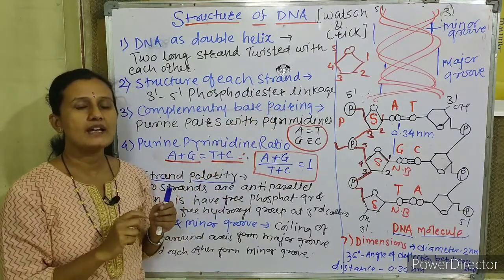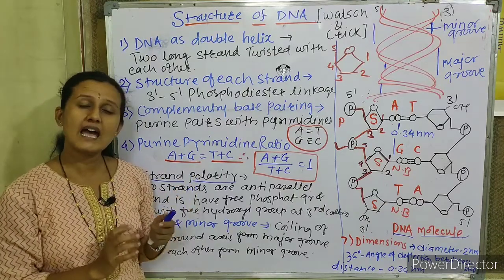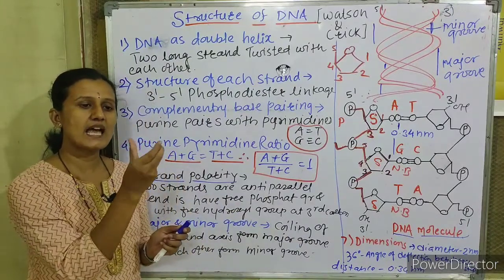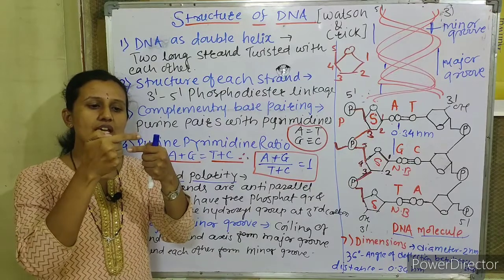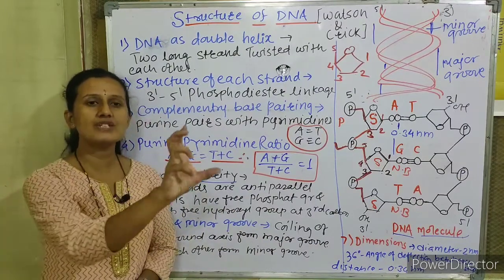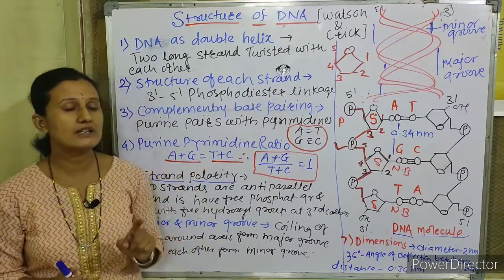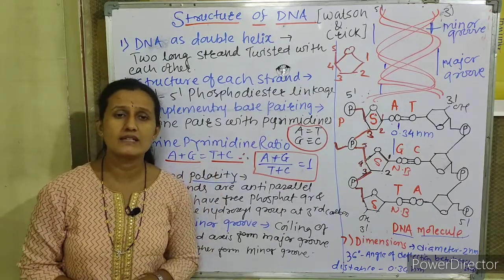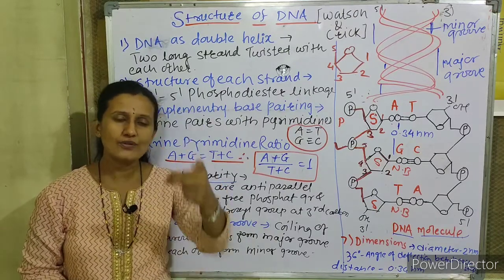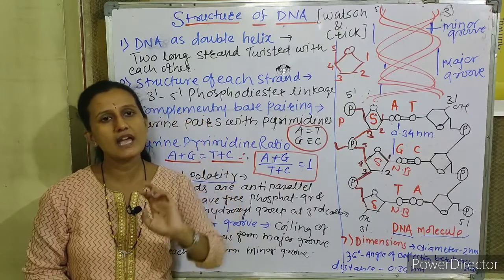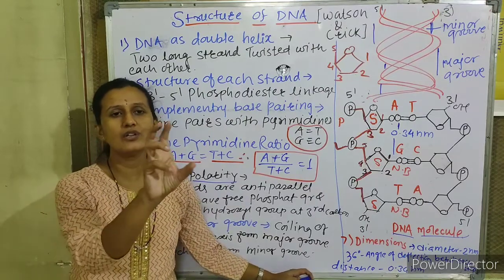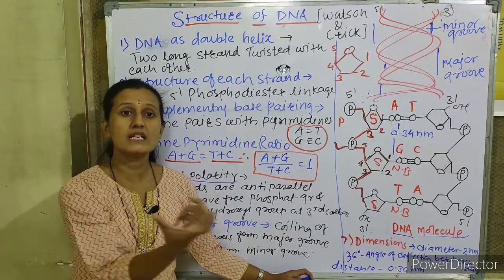Each nucleotide step makes an angle of deflection of 36 degrees with the central imaginary axis. In one complete turn of the DNA helix, there are 10 nucleotide base pairs. Therefore, 10 steps × 36 degrees = 360 degrees per complete turn. The distance between two successive nucleotides is 0.34 nanometers.